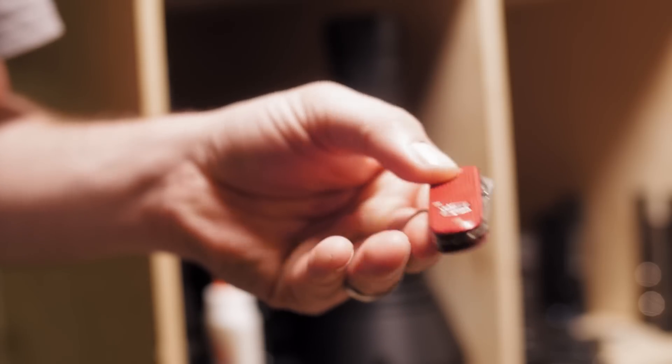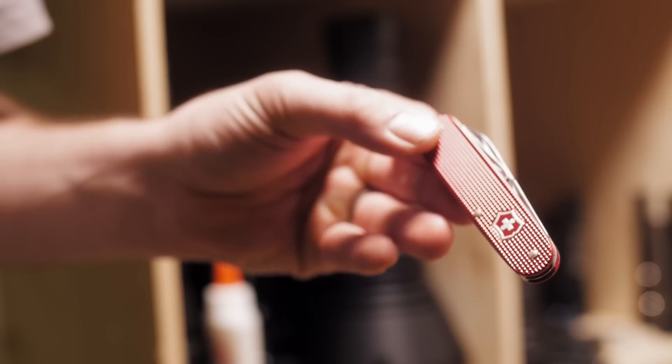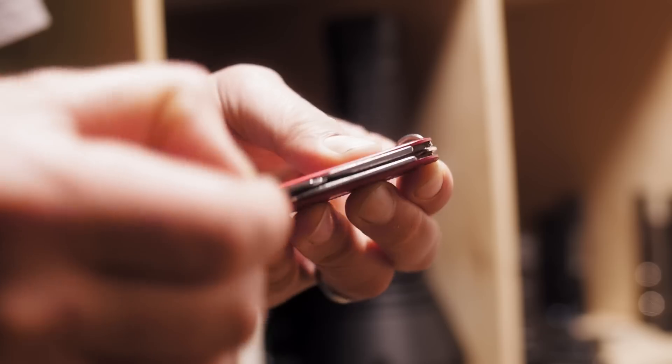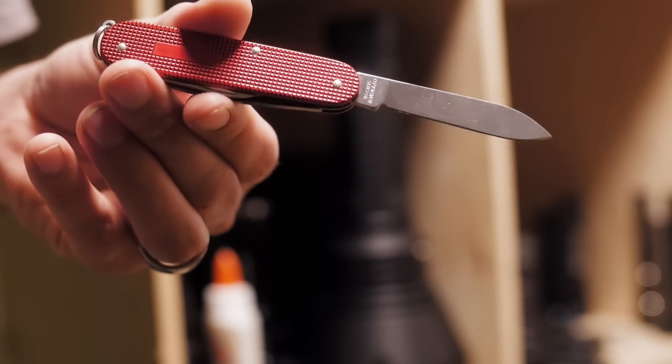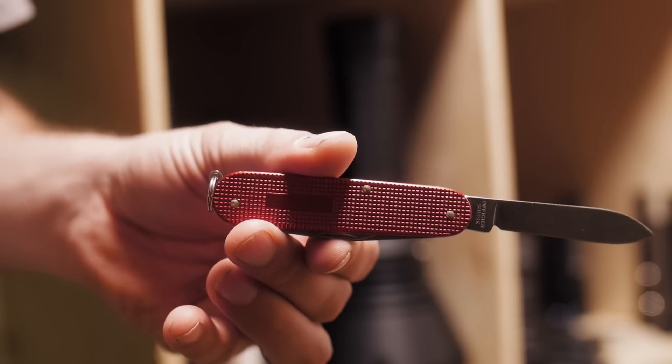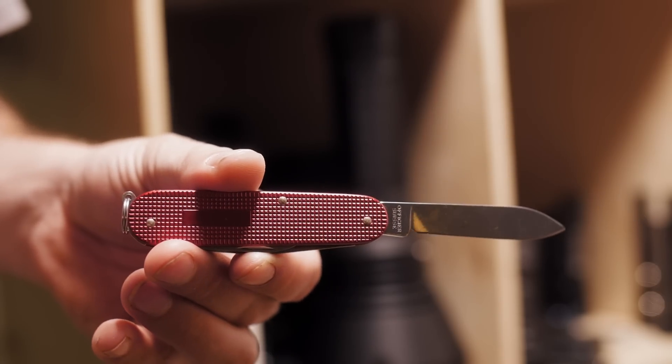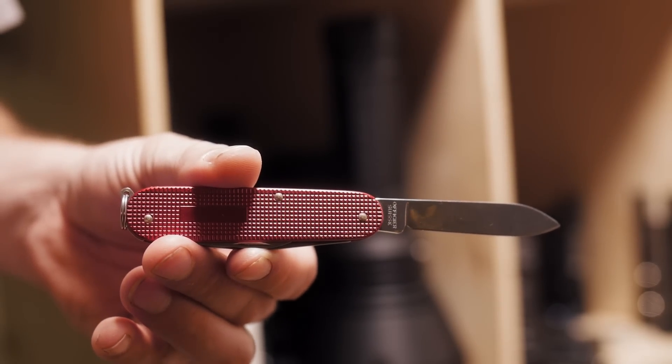Victorinox, who makes Swiss Army Knives, uses a stainless steel called 1.4110 in a lot of its knives, which some internet knife people say is close to 440A stainless steel. You can look up the steel, look up the composition of the steel, and determine that for yourself.